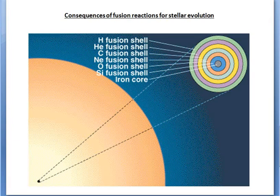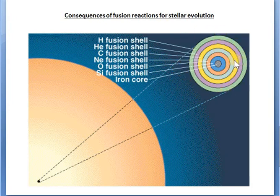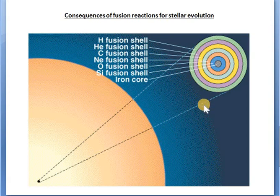As a result of all this — because the mass taking part in each successive fusion process is smaller than the one before — the chemical evolution of the star develops into an onion skin model, with the most massive products at the center surrounded by concentric layers of less massive elements. Additionally, the lifetime of each successive evolutionary phase will be shorter and shorter.